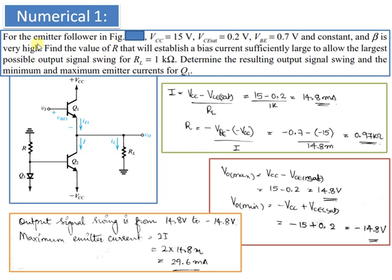Now coming to the first numerical. The problem states: for an emitter follower shown in the figure, VCC is given, VCE sat is given, VBE is given, and beta is very high. We need to find the value of R and the largest possible output signal swing for RL equal to 1 kilohm, and determine the output signal swing and the minimum and maximum emitter currents for Q1. First, to find the current I: I equals VCC minus VCE sat divided by RL, which gives a value of 14.8 milliamps.